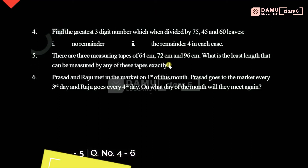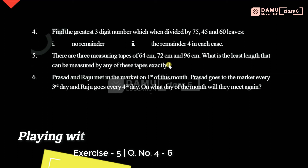Hello viewers. In this module we are going to discuss the 4th question: find the greatest 3-digit number which, when divided by 75, 45 and 60, gives a remainder of 4 in each case. To find the greatest 3-digit number divisible by these numbers, we need to find the least common multiple (LCM) of all these numbers.